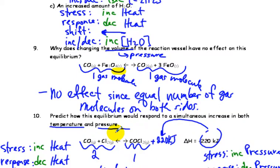This next one: how would an increase in pressure and an increase in temperature affect this equilibrium? The enthalpy is negative 220 kJ, so that's the same thing as saying it's an exothermic reaction.